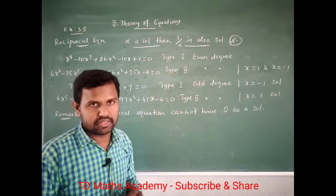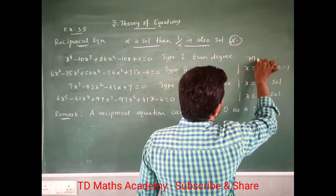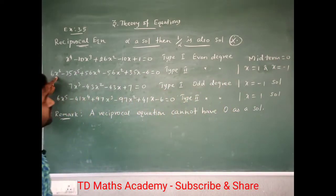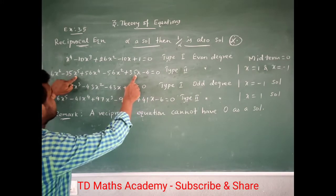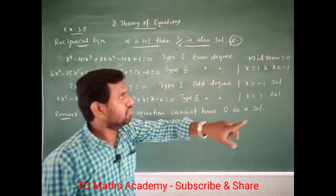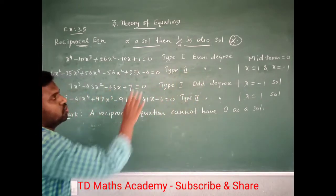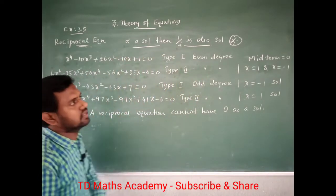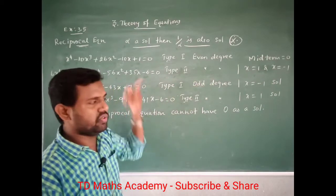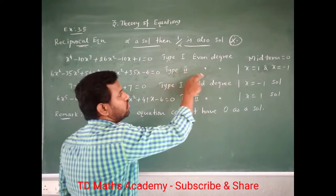For Type 2 even degree, there is a condition: the middle term must be 0. For example, in x power 6, the middle term — the x cubed term — must be 0. If the middle term is 0, then x equal to plus 1 is a solution and x equal to minus 1 is also a solution. This is the condition for Type 2 even degree.